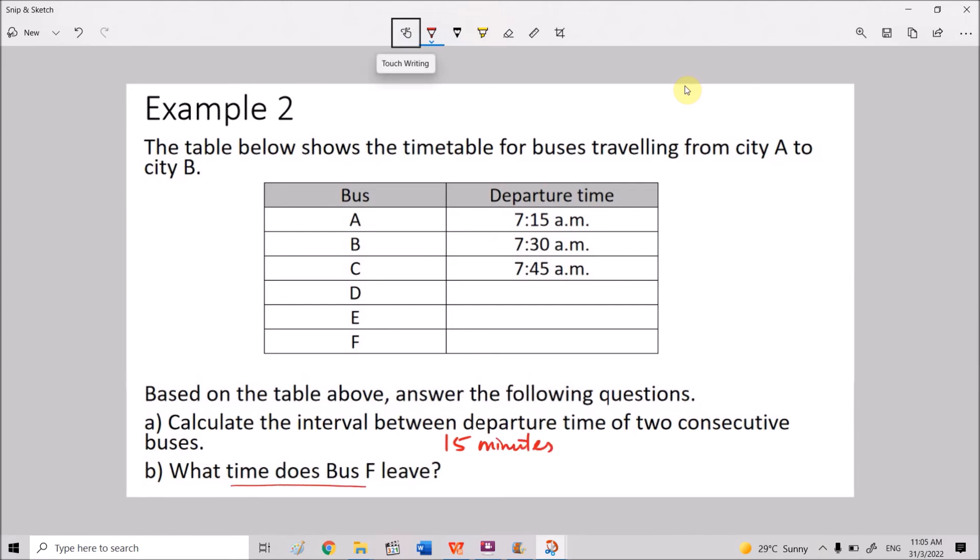Next one, what time does bus F leave? So assuming that this is a sequence from A to F, so we can find the next departure time here by just adding 15 minutes to C, you get 8 AM. If we add another 15 minutes, you get 8:15 AM. Add another 15 minutes, you get 8:30 AM. Hence, this is the answer to question B.